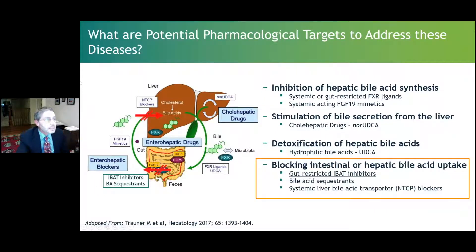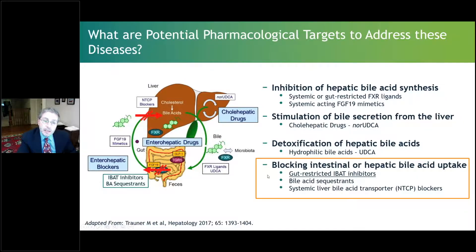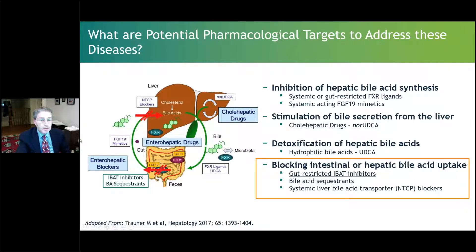This slide summarizes the potential pharmacologic targets being investigated to reduce the burden of hepatotoxic bile acids, and in fact it includes most of those answers indicated on the previous slide. This includes inhibition of hepatic bile acid synthesis, stimulation of bile secretion from the liver, and detoxification of hepatic bile acids. But today's talk will focus on blocking intestinal or hepatic bile acid uptake — specifically, the gut-restricted IBAT inhibitors as a potential pharmacologic target.